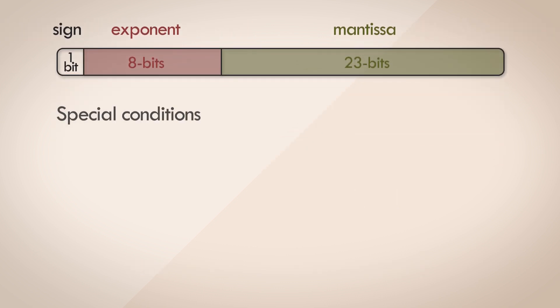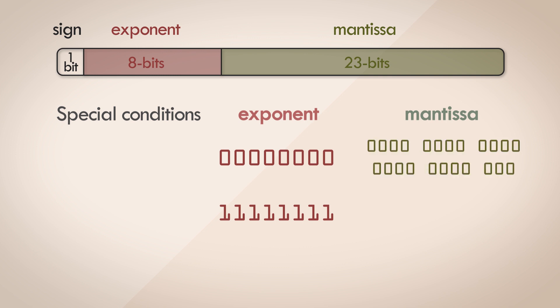I'd mentioned in the previous video that two states of the exponents were reserved for these special conditions: all zeroes and all ones. If all of the bits of the exponent are zero, and if all of the bits of the mantissa are zero as well, then this combination is represented as the number zero. It doesn't matter what the sign bit is, it can be negative or positive, but the floating point processor disregards this and considers the number as zero.